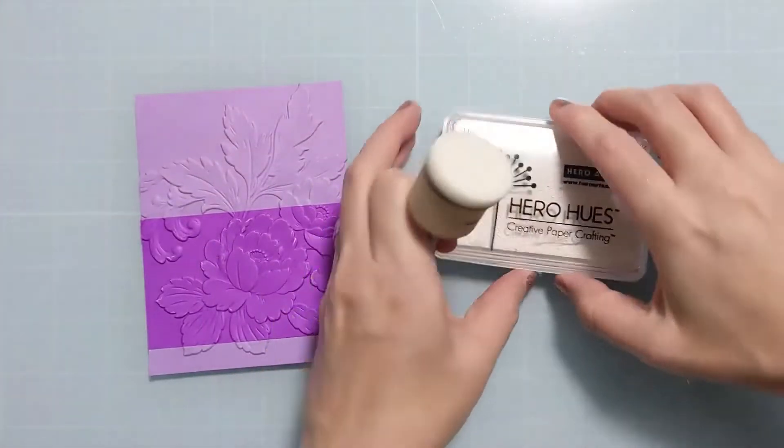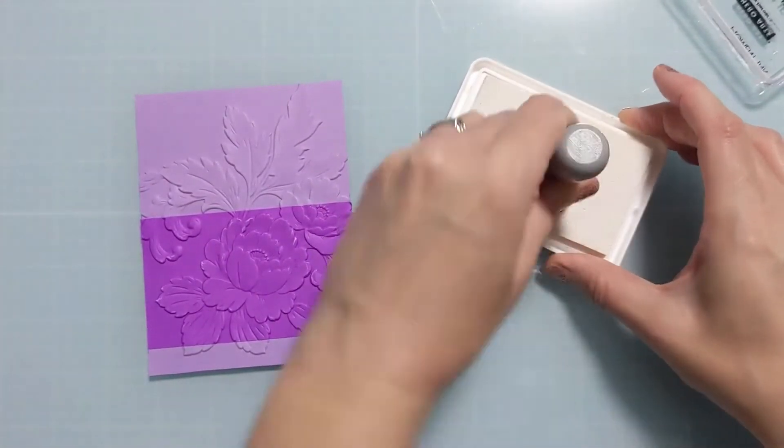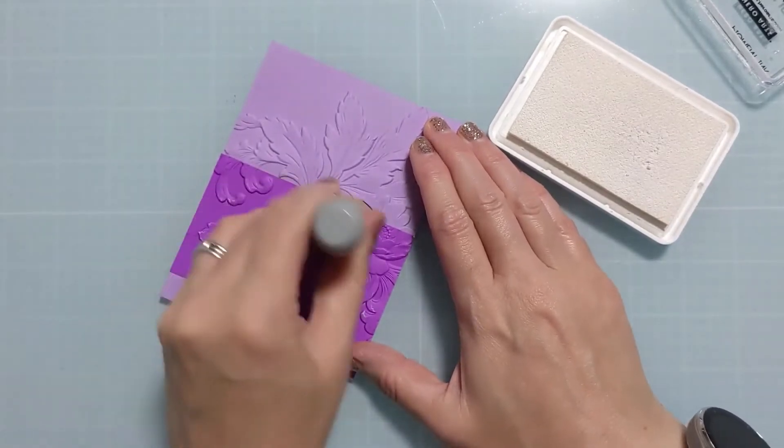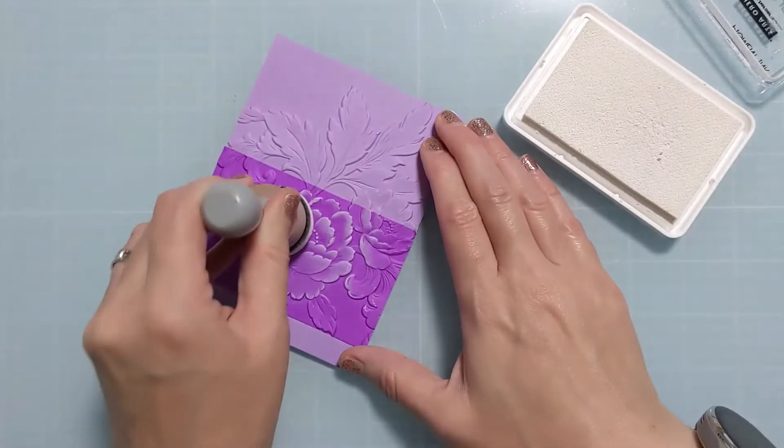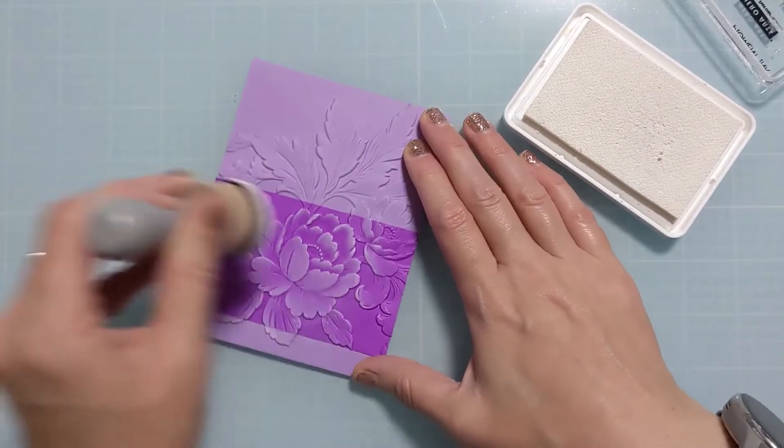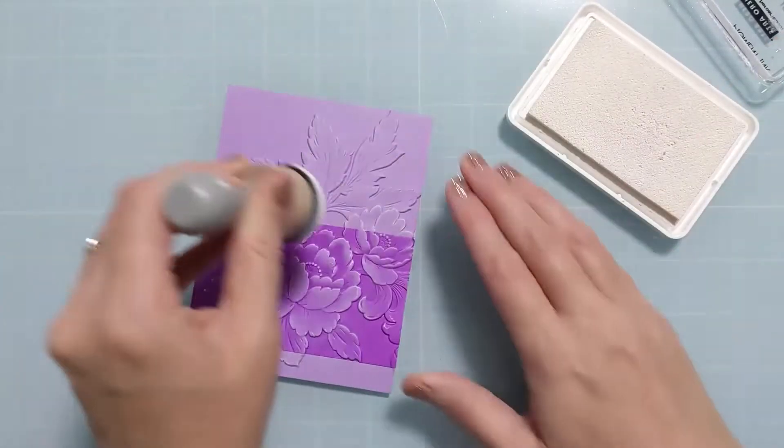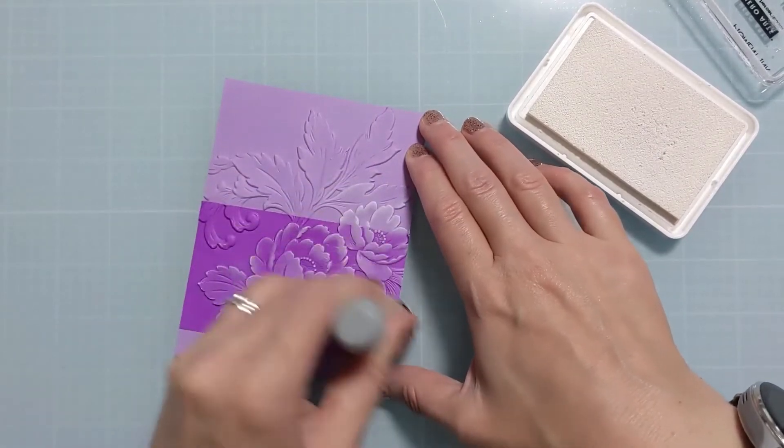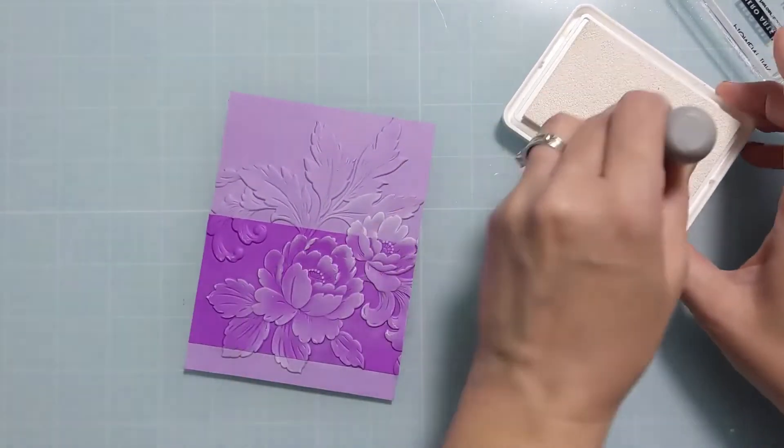So my way of addressing the cracking is just by adding more white. I'm going to use this white unicorn, it's called Unicorn White Pigment Ink from Hero Arts. This is my favorite white pigment ink. I was actually going to do this anyway so it didn't phase me at all when I saw the cracking because I knew I was going to add white to it as well.